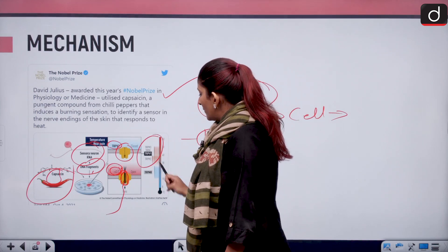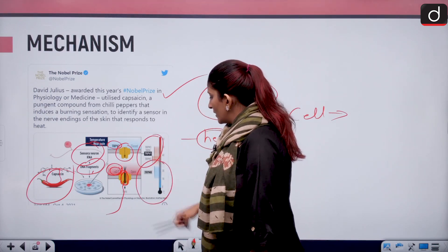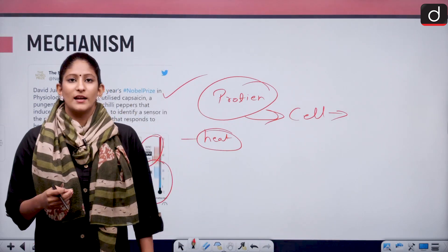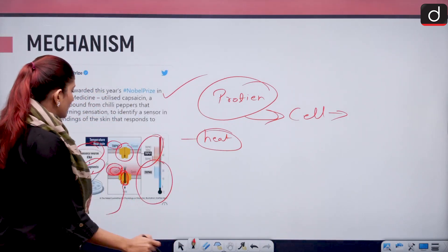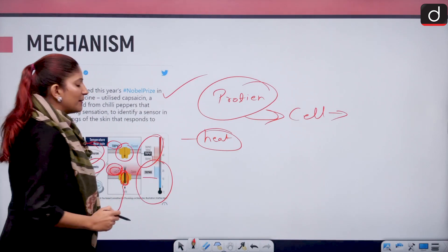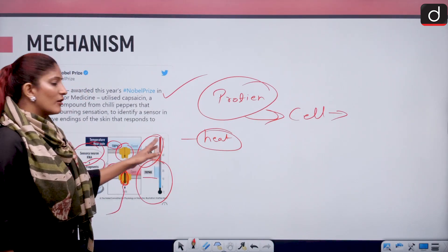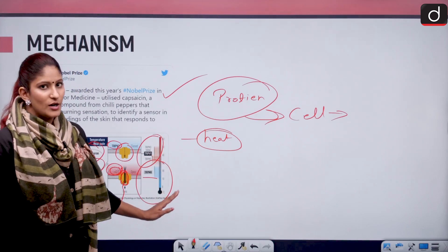Secondly, similarly was done for feeling cold. Another experiment was done for feeling cold. That was TRP-M8. TRP-V1 for hot temperature and TRP-M8 for cold temperature.